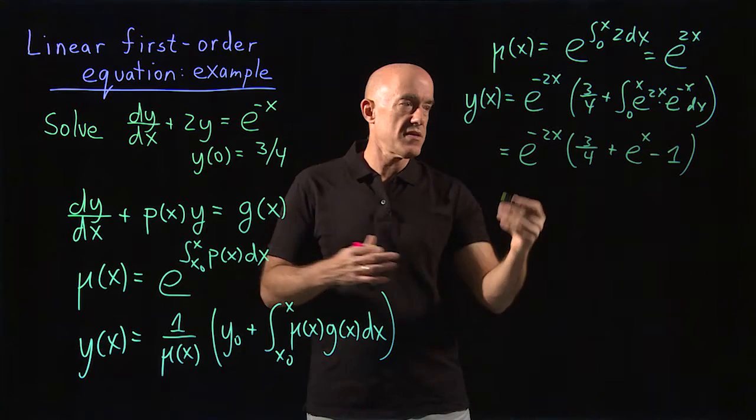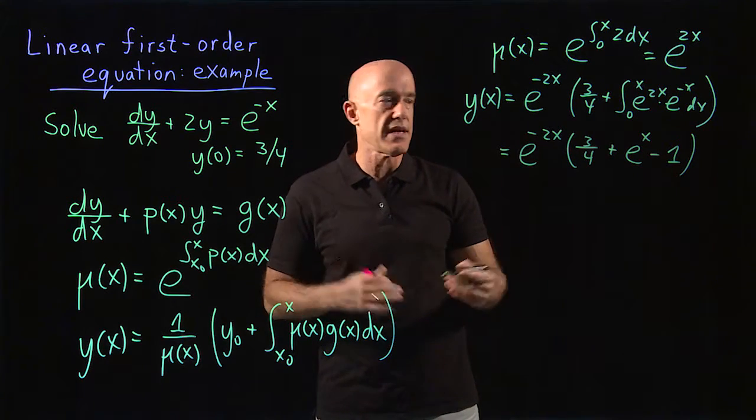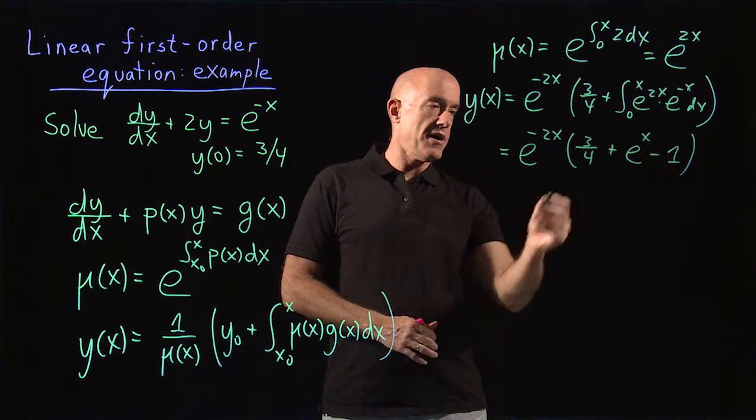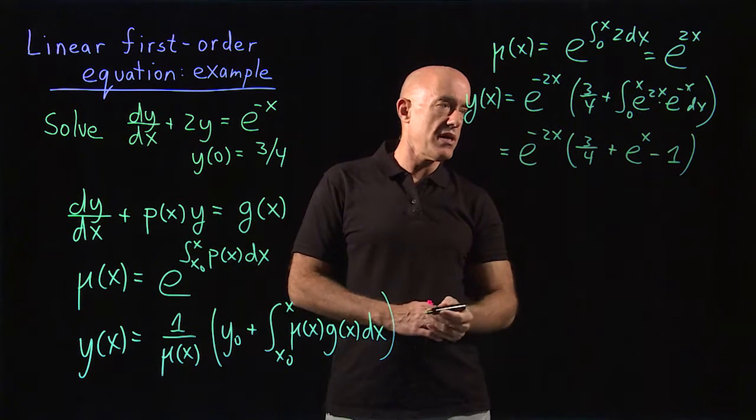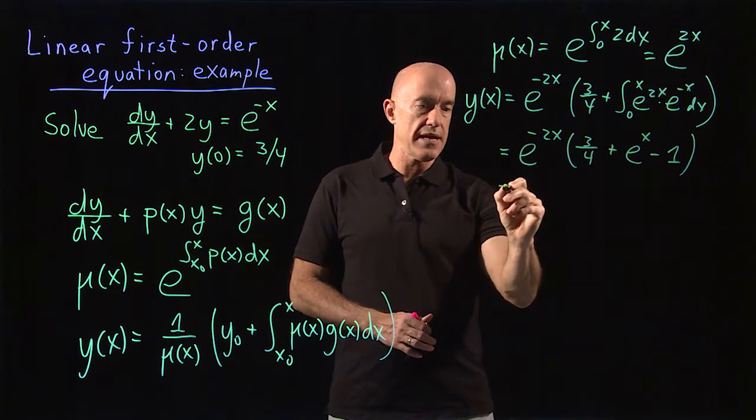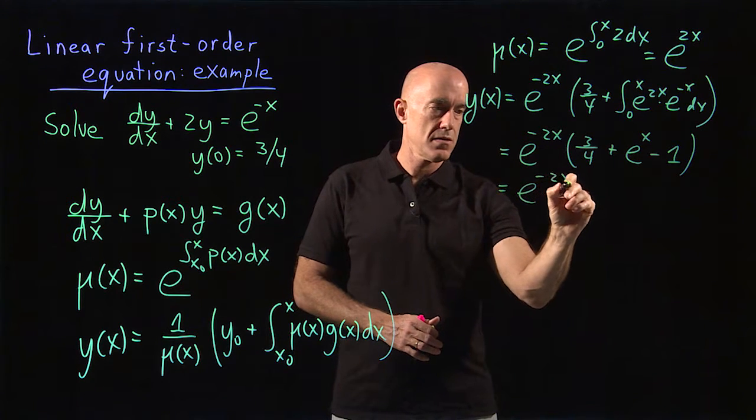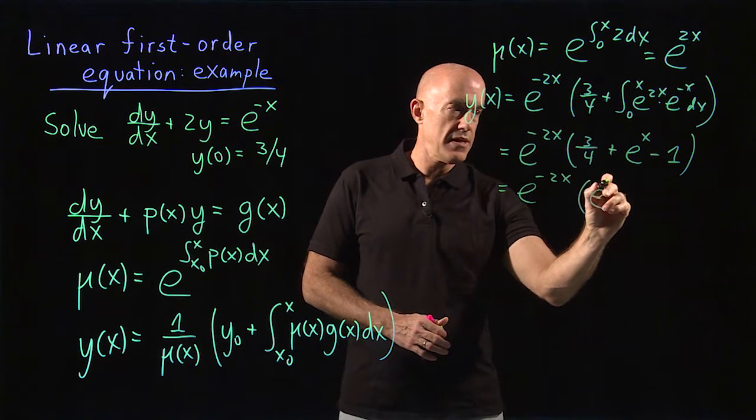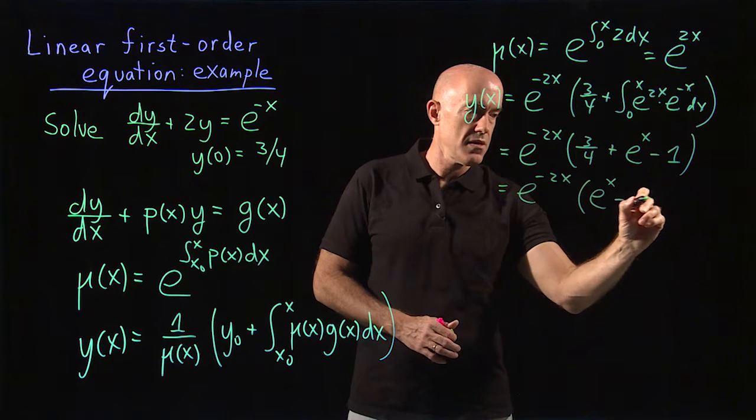And then we can simplify it. 3/4 minus 1 is minus 1/4. So this is e^(-2x) times (e^x - 1/4).